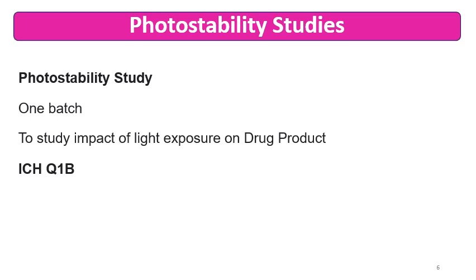Photo stability study is done on the formulation in the proposed marketing pack, and in that study the product is kept as such as a dark control, and open, and then in the final marketing pack also, to study the impact of the light and how the packaging is protecting the formulation from the effect of light. Generally, photo stability study gives a clear idea about photolabile formulations or photolabile drug substances. If the drug substance is photolabile, then some protection is required to be given by the packaging material from the effect of light. The guideline dealing with this stability study is ICH Q1B.